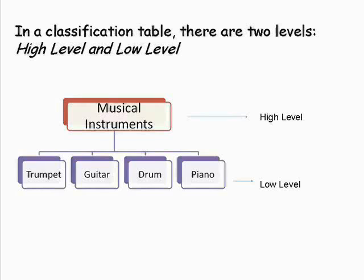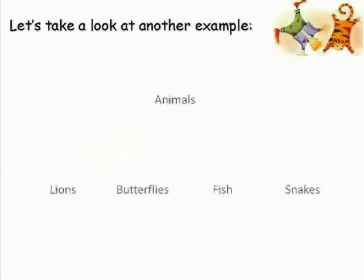Trumpet, guitar, drum, and piano are at the low level and they are members of the group of musical instruments. We can see that the name of the group is at the high level, while the members of the group are at the low level. Let's take a look at another example.